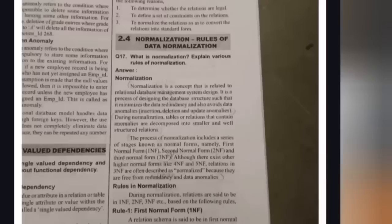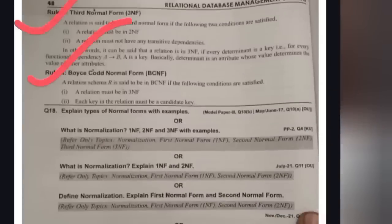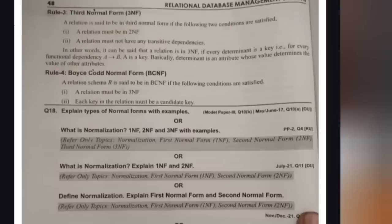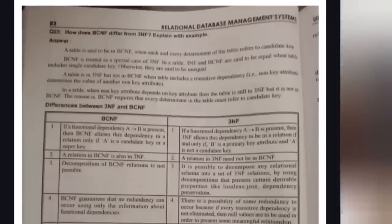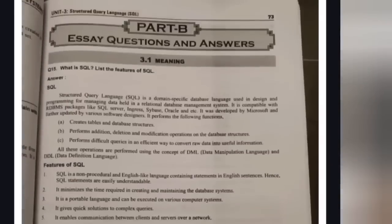Now we'll discuss Unit 2: Normalization. I have already uploaded a dedicated video on normalization in our channel, so try to watch that video. Normalization means storing data using normal forms in a standardized format. The normal forms are 1NF, 2NF, 3NF, and BCNF. Watching that video will help you understand the concept and easily score 10 marks. This is the first and last question from Unit 2.